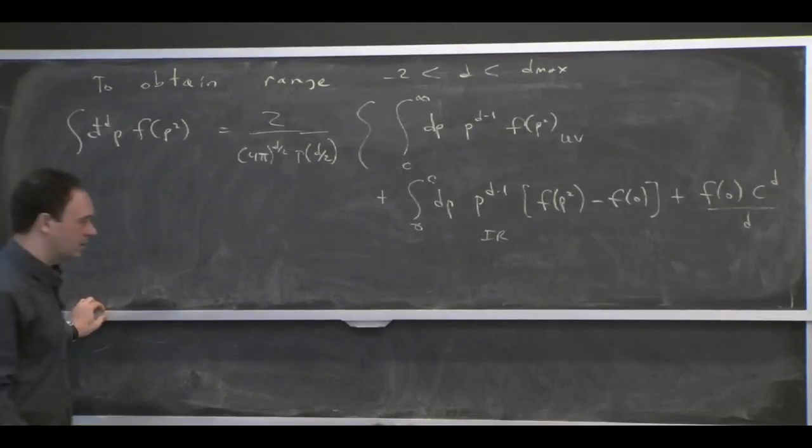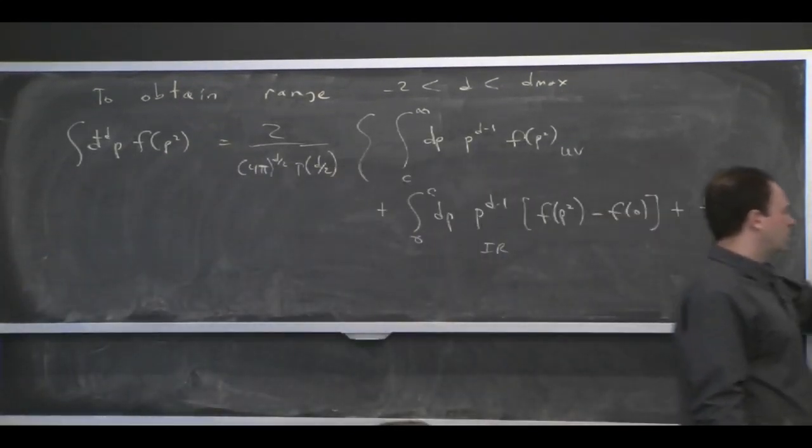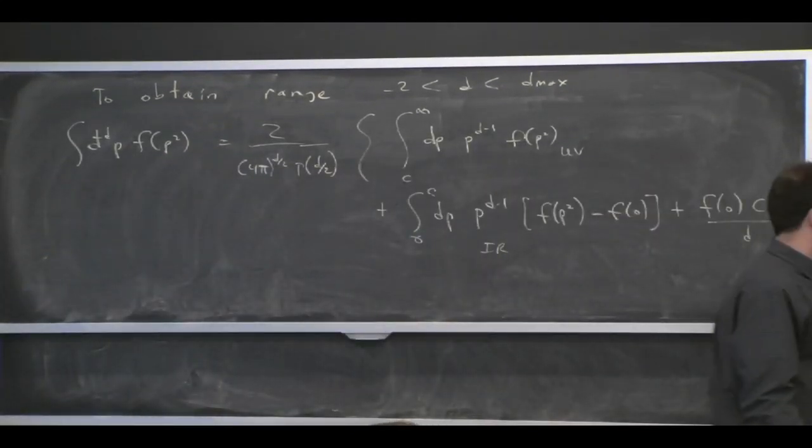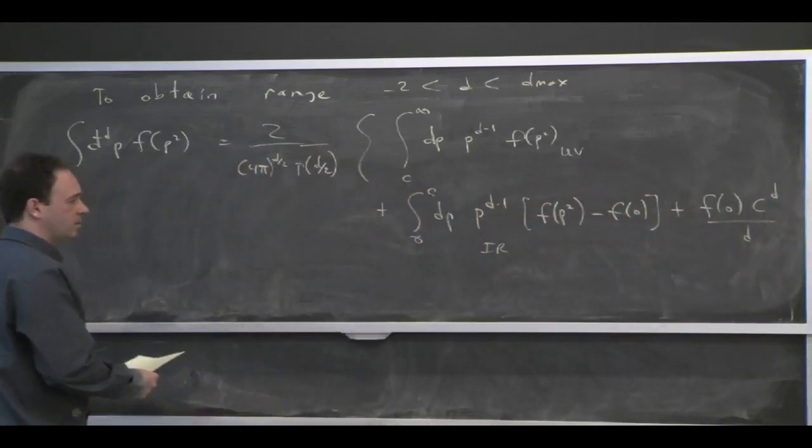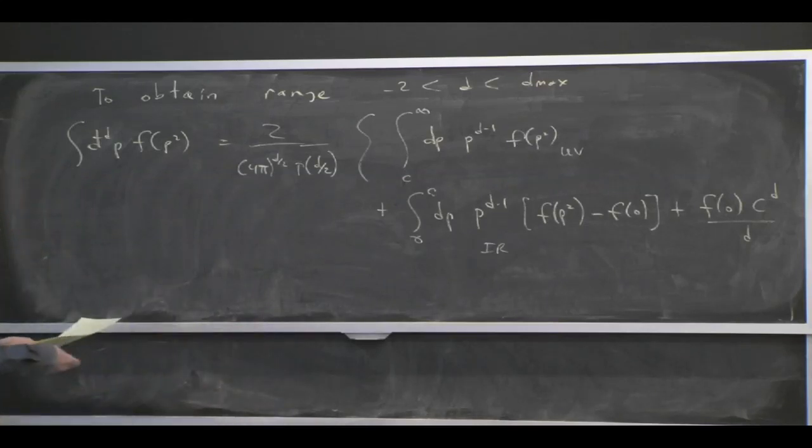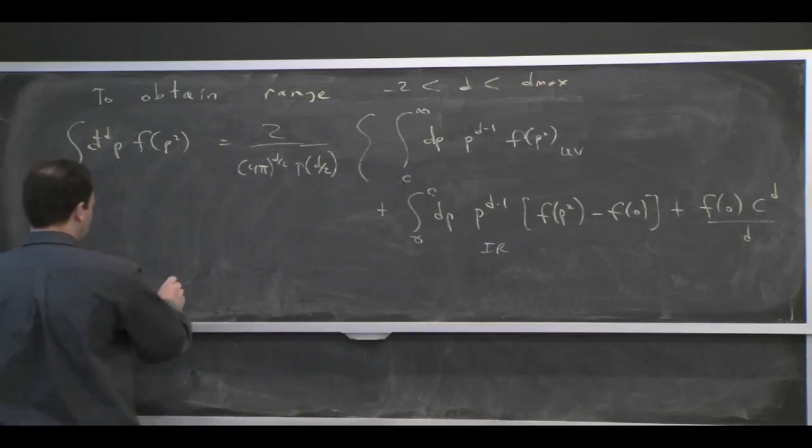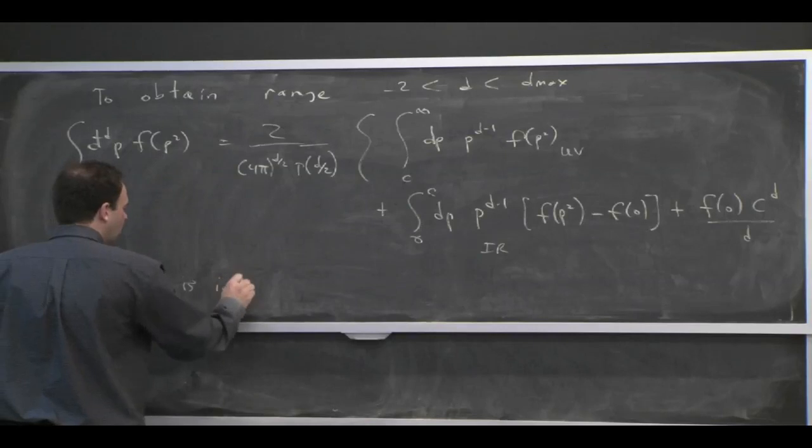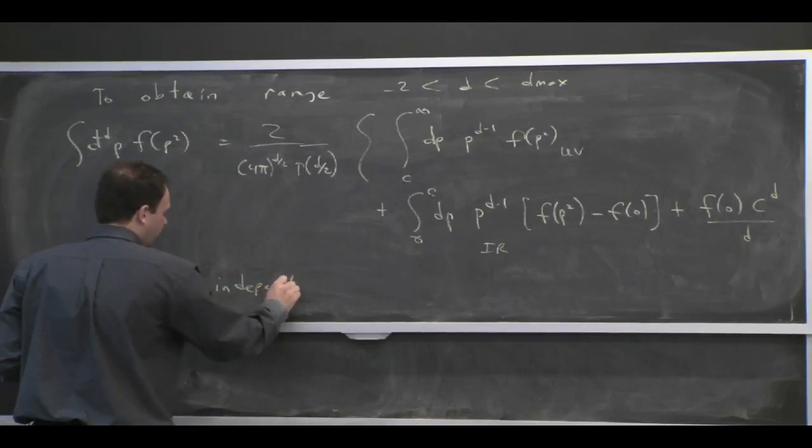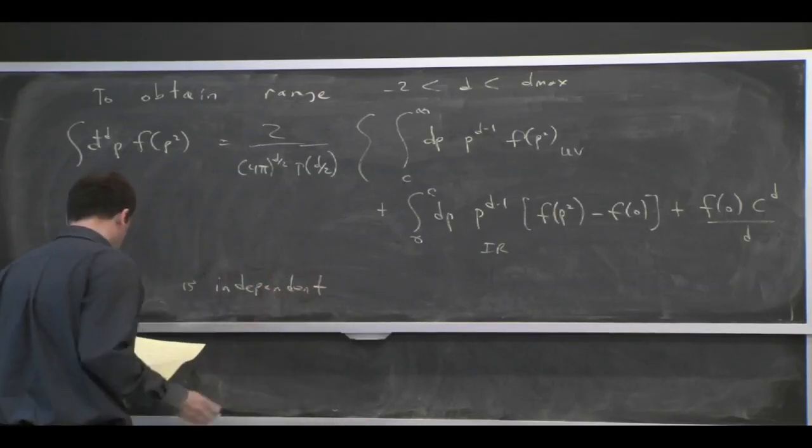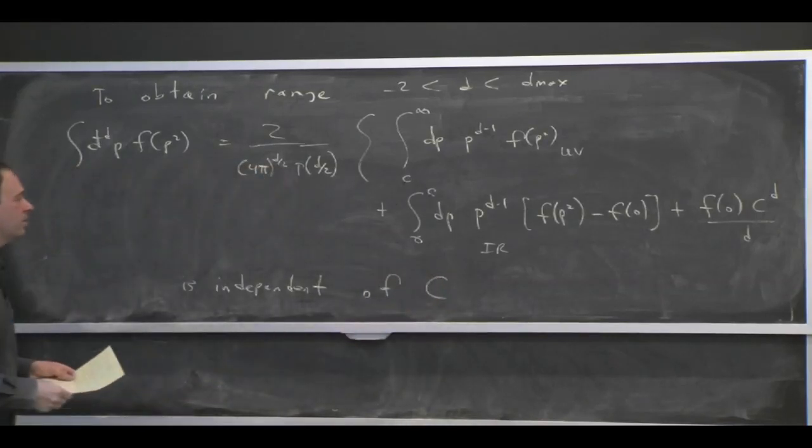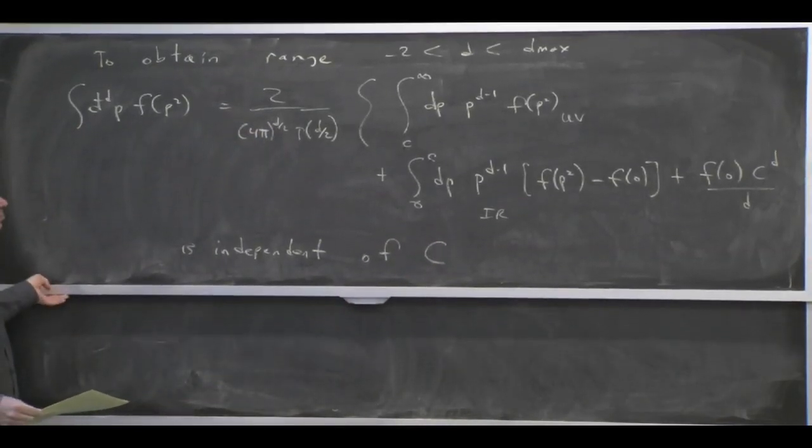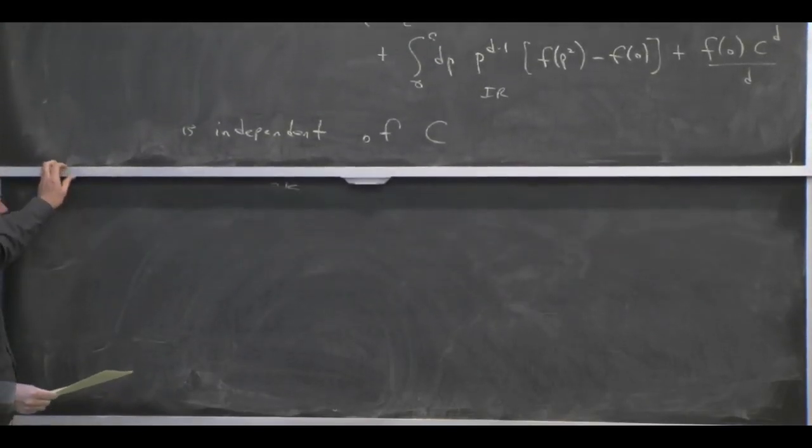And the idea of introducing this cutoff, C, is that we split the UV piece and the infrared piece. And so we can do one kind of continuation for d up here, making epsilon positive, one kind of continuation down here. And the result, when we put these back together, is independent of C. So that's the sense in which what I said up here is that you can use it for both UV and IR divergences, because you could always introduce some parameter C to split. They're occurring in different regions of momentum space, so you could always split them up, regulate each one with different values of d, and then put them back together. And the answer, when you put them back together, is independent of C.